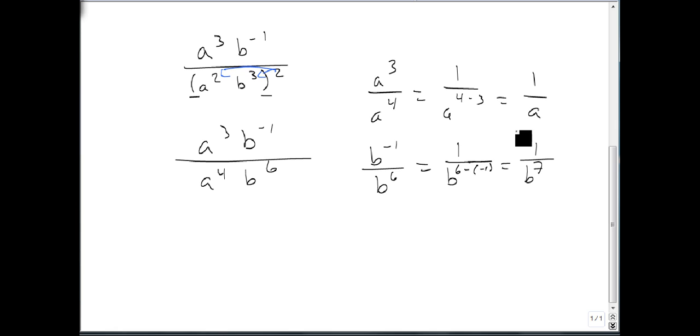We combine these by multiplying. We get a single one on top. We get a single a on bottom. We get a b to the seventh on bottom. Then we have our answer, one over a b to the seventh.